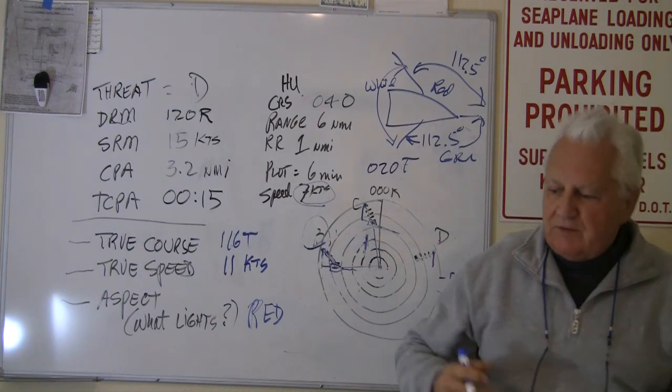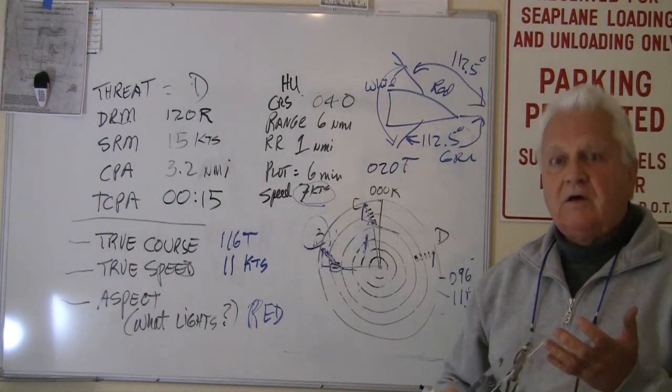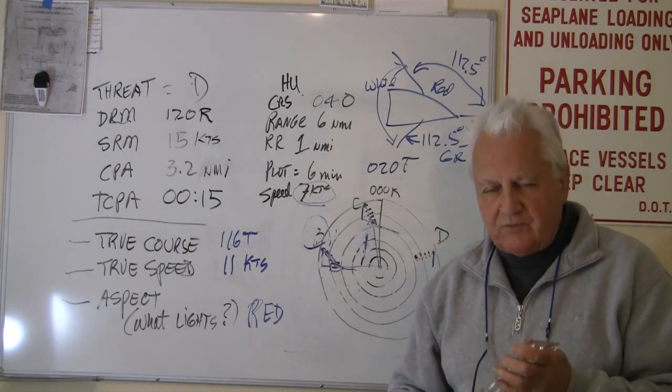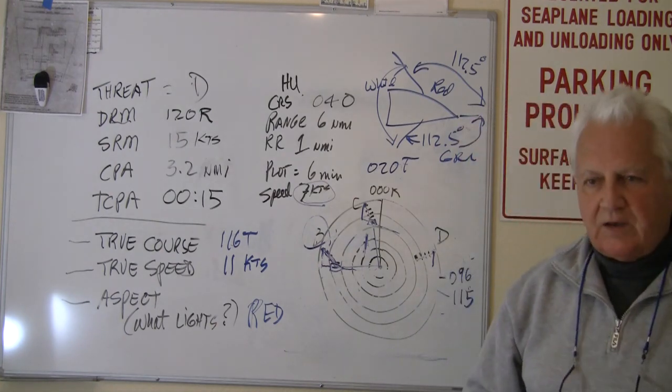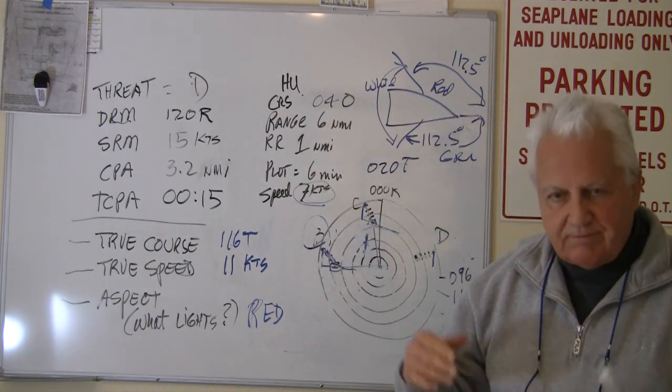So there we go. And that's how we do it. Calculating the speed, calculating the course of the other vessel as viewed from their cockpit, and then also figuring out the aspect and the color of lights we would see at night. And that's it.